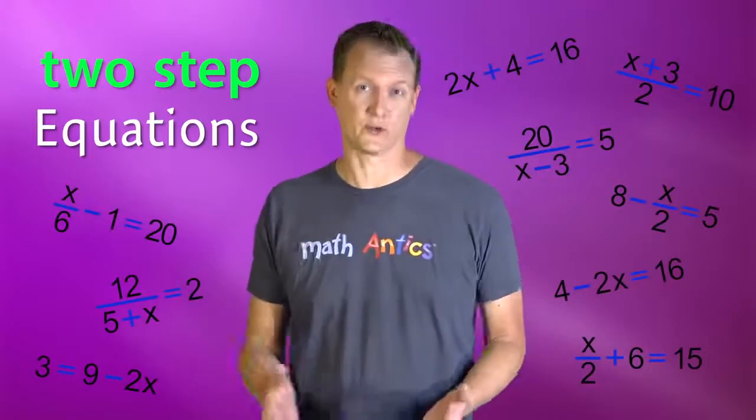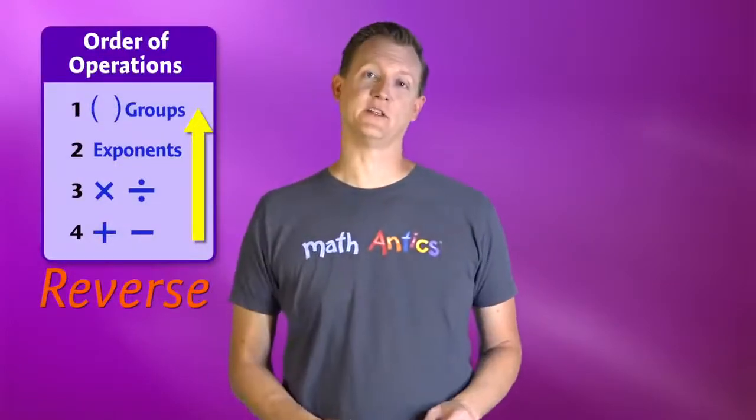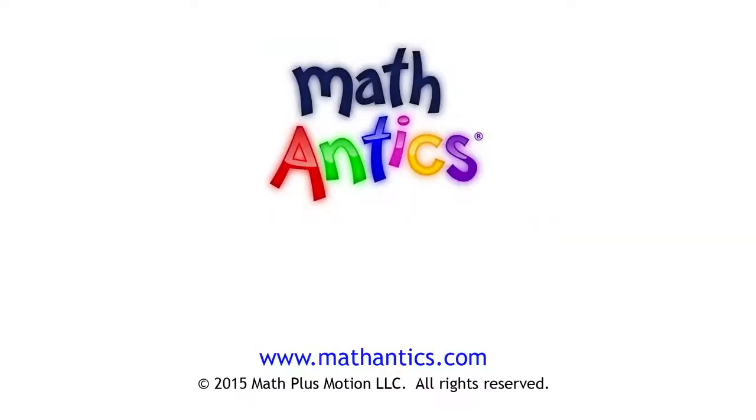As you can see, solving two-step equations is definitely more complicated than single-step equations because there are so many different combinations and different ways to group things. But if you just take things one step at a time and remember to undo operations using the reverse order of operations rules, it will be much easier. Just pay close attention to how things are grouped in an equation, and be on the lookout for those implied groups on the top and bottom of a fraction line. And because there are so many variations of these two-step equations, it's really important to practice by trying to solve lots of different problems. As always, thanks for watching Math Antics and I'll see you next time! Learn more at MathAntics.com.